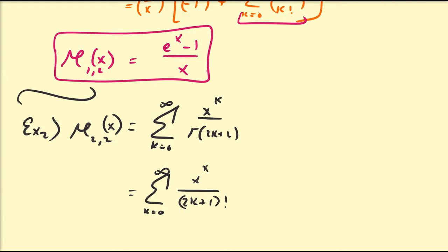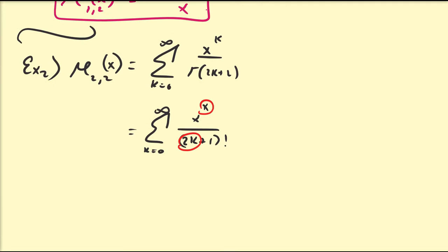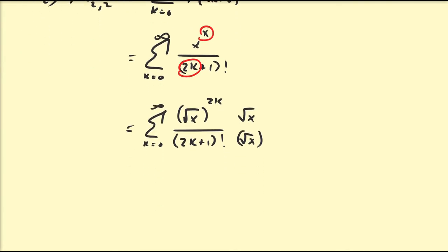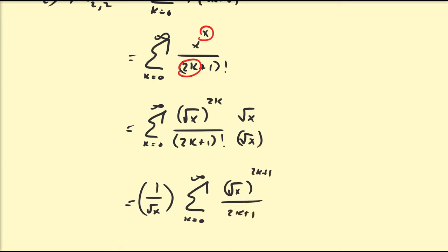Since the top has power k and the bottom has 2k, I want to match them. I rewrite x^k as (√x)^(2k), giving the sum of (√x)^(2k) over (2k+1)!. Multiplying top and bottom by √x increments the power to 2k+1, giving 1/√x times the sum from k=0 to infinity of (√x)^(2k+1) over (2k+1) factorial.